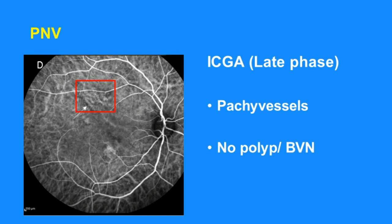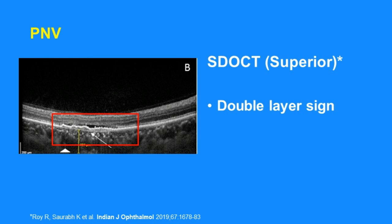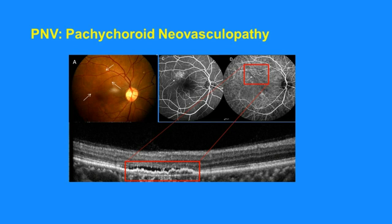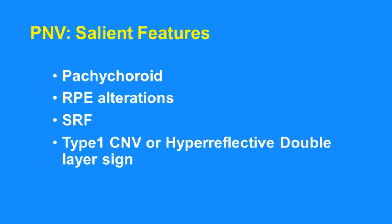Indocyanine green angiogram at late phase shows pachy vessels in the supratemporal area; no polyp or branching vascular network could be seen. EDI OCT through the superior area shows the typical subretinal fluid with a double layer sign. We can also see pachy vessels in the choroid. So this is a case of typical pachychoroid neovasculopathy, where we see pachy vessels on ICGA, dilated choroidal vessels, and a double layer sign on EDI OCT.